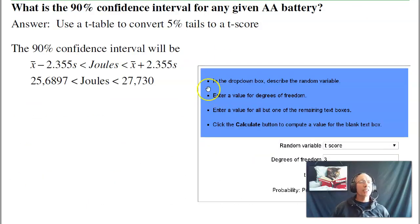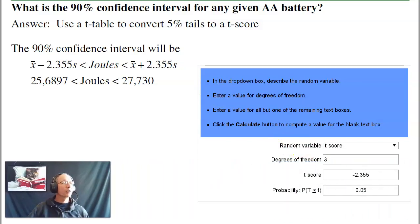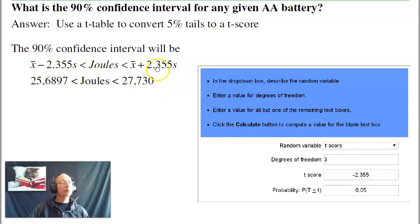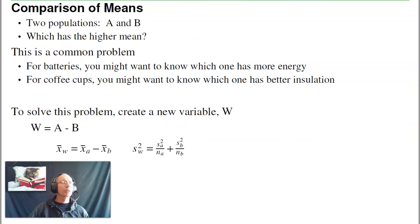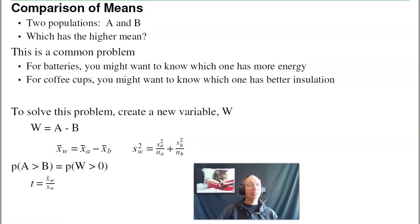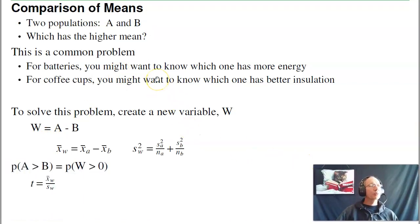For the 90% confidence interval — if I buy a battery, what will the energy be with probability 0.9? Going back to StatTrek with 5% tails and three degrees of freedom, the t-score is 2.35. So I take the mean plus or minus 2.35 standard deviations, which tells me the energy is somewhere between 25,000 and 27,000 joules with a probability of 0.9. I can also use a t-test to compare two populations — suppose I took a different brand of battery, type B, and want to find out which has more energy: type A or type B.